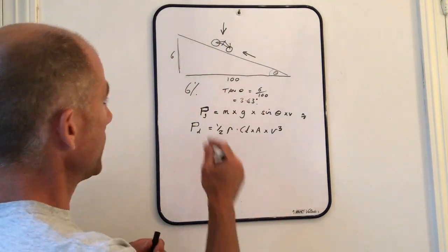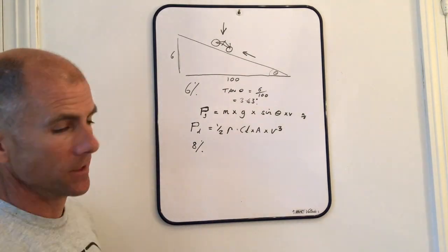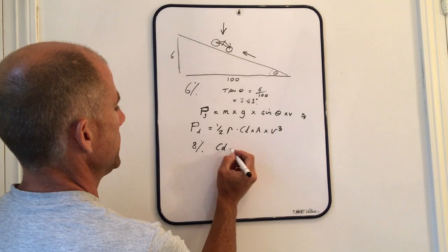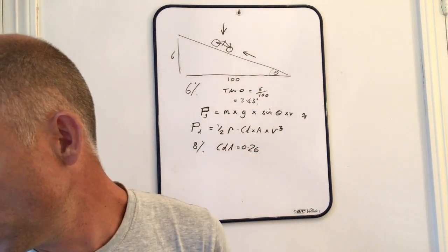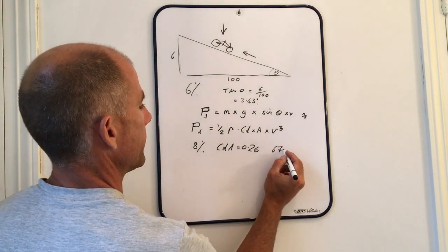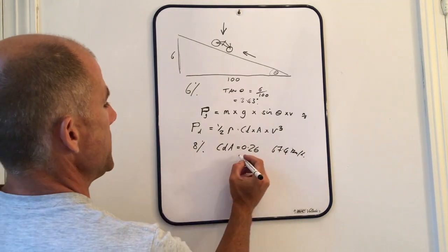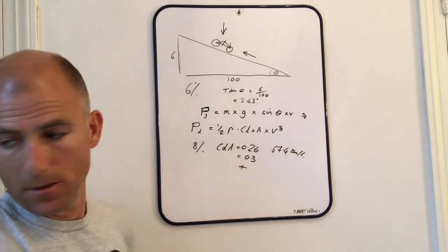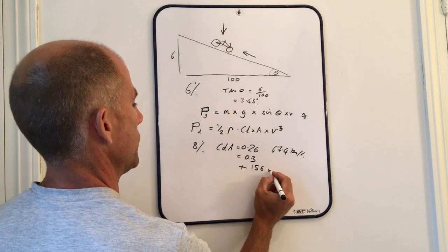Just one more example. If the slope becomes 8%, obviously the speeds are going to increase. And the guy in the super tuck 0.26 is going to be doing 67.4 kilometers per hour. And the 0.3 guy, to achieve the same speed, has to add 156 watts.